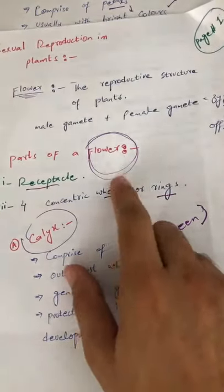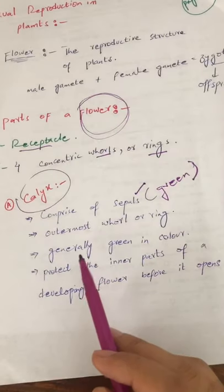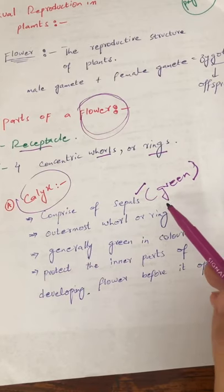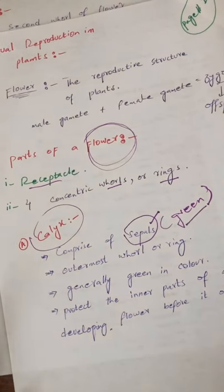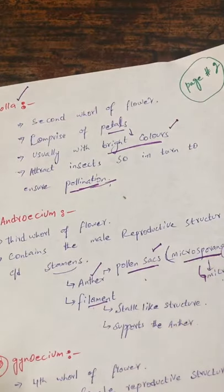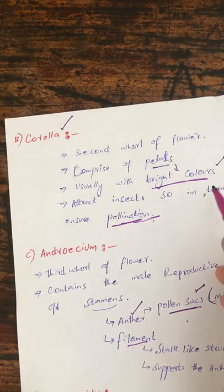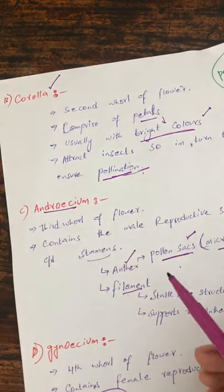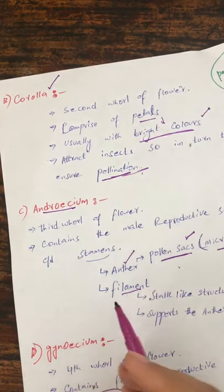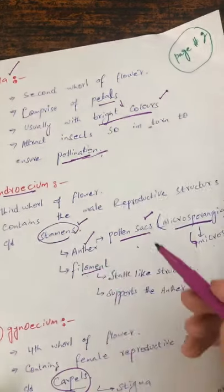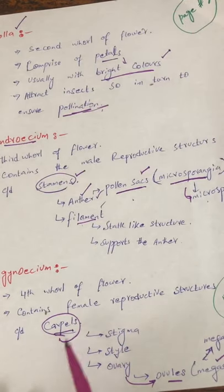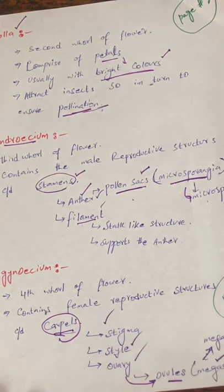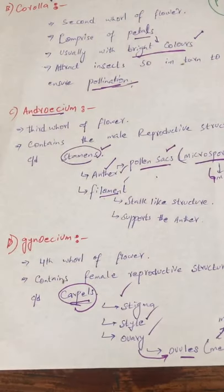To summarize: the flower is made up of the receptacle, which is the swollen base. The first whorl is the calyx, made up of green sepals that are protective in nature in the early stages. The second is the corolla, made up of petals that are brightly colored for cross-pollination. The third is the androecium, made up of stamens — each stamen has an anther and a filament. The fourth is the gynoecium, made up of carpels — each carpel has a stigma, style, and ovary.